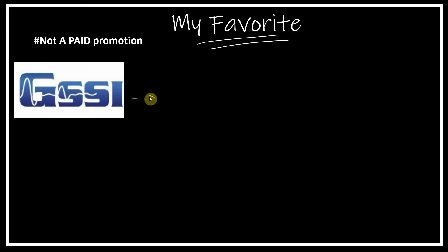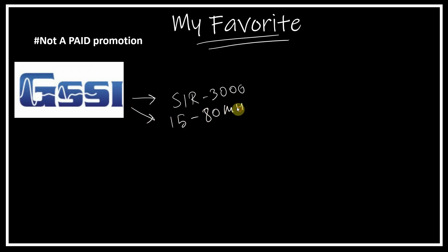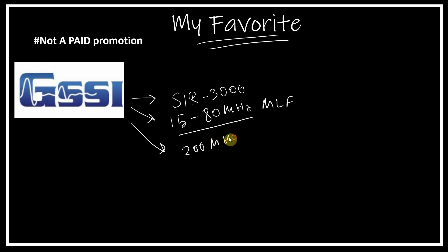I used the SIR 3000 control unit — SIR stands for Surface Interface Router. I used a 15 to 80 MHz MLF (multi-low frequency) antenna, which is a bistatic system, and also a monostatic antenna up to 100 MHz. This was my full GPR arsenal, and it was sufficient for geophysical and shallow subsurface exploration. The 15 MHz antenna can give you up to about 30–35 meters depth depending on site conditions.